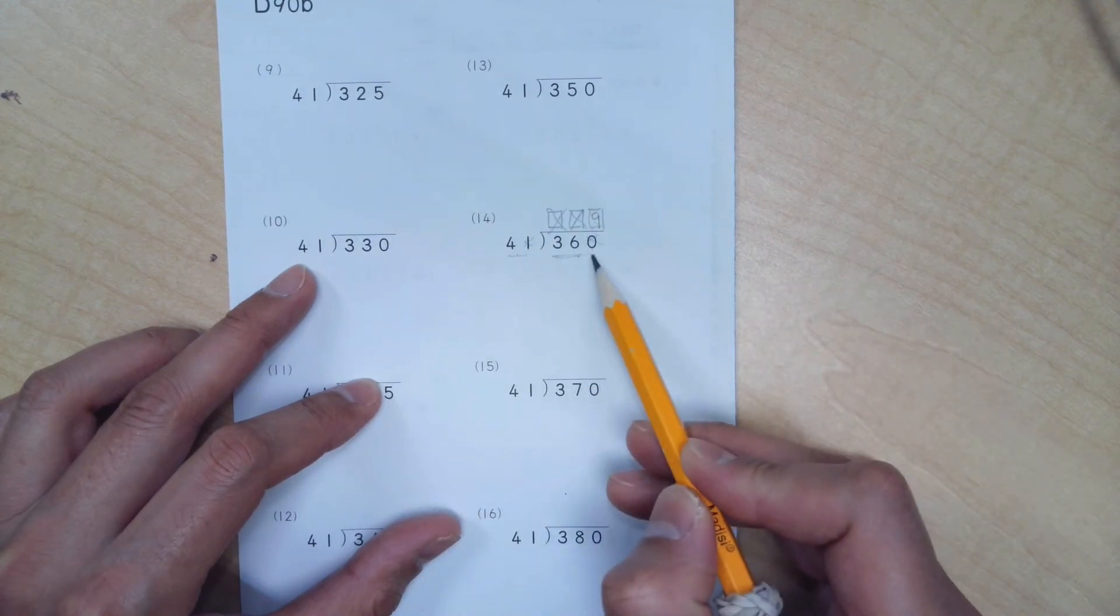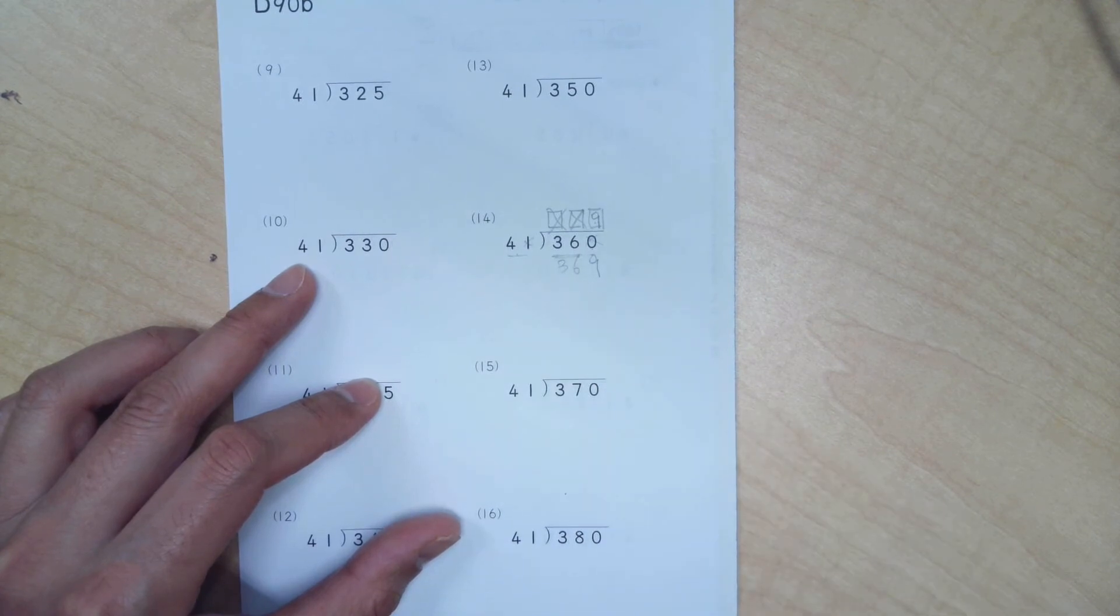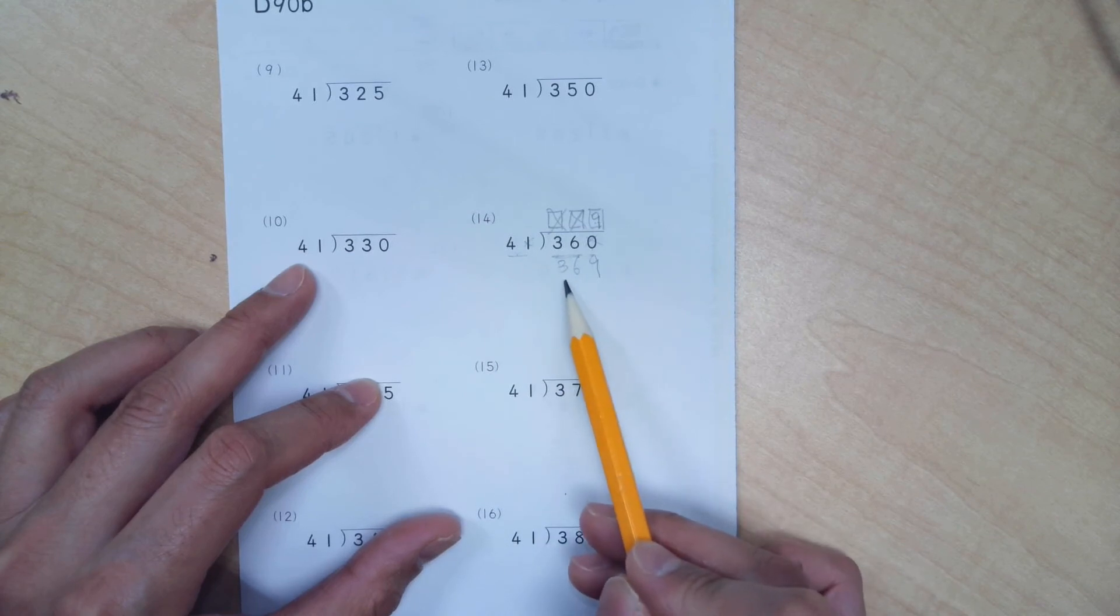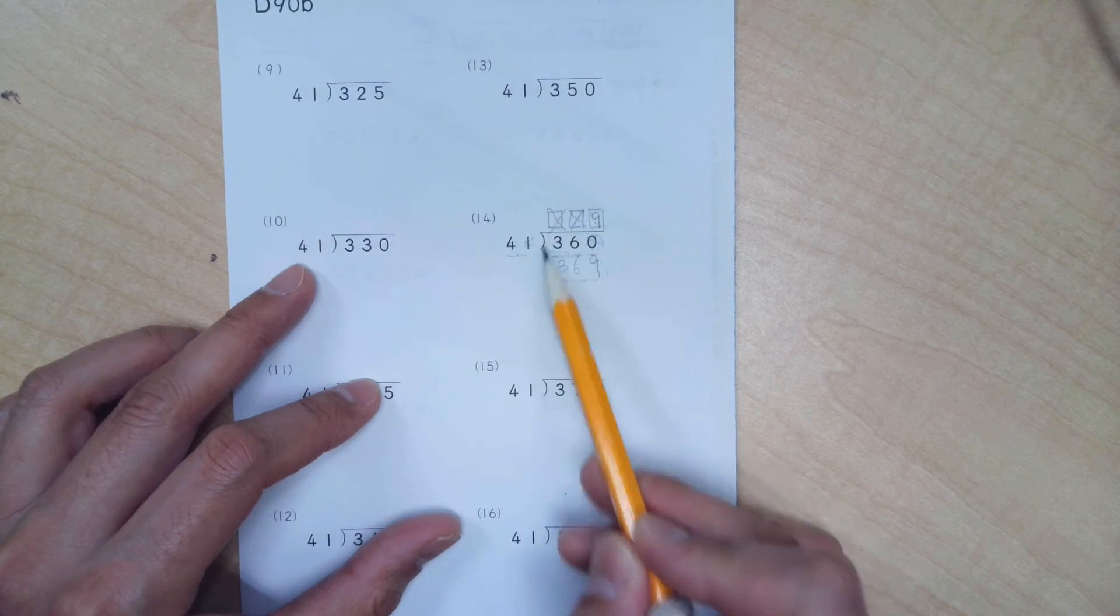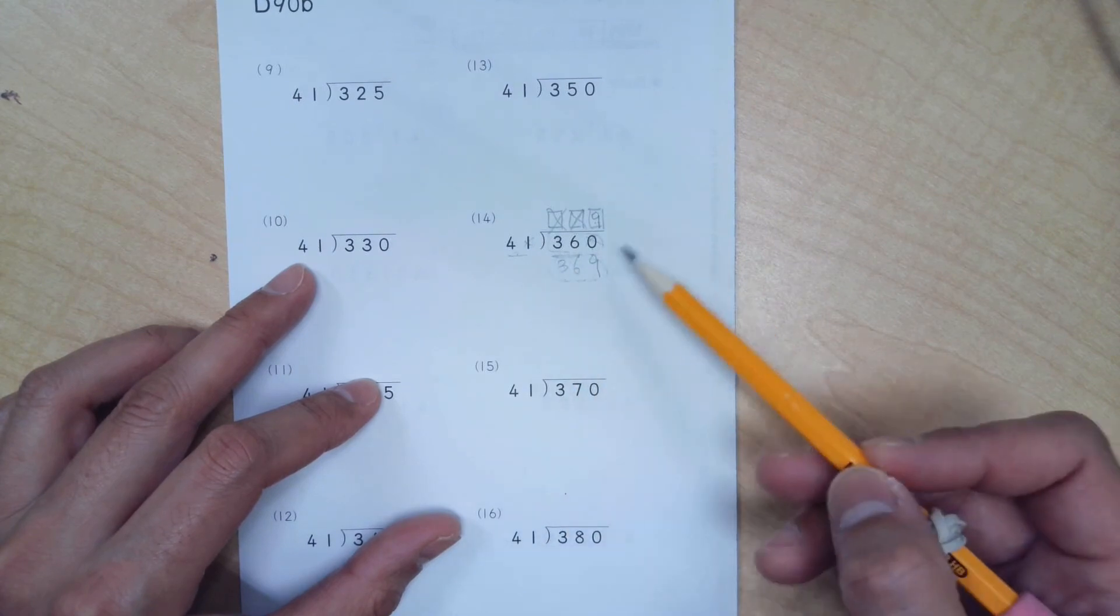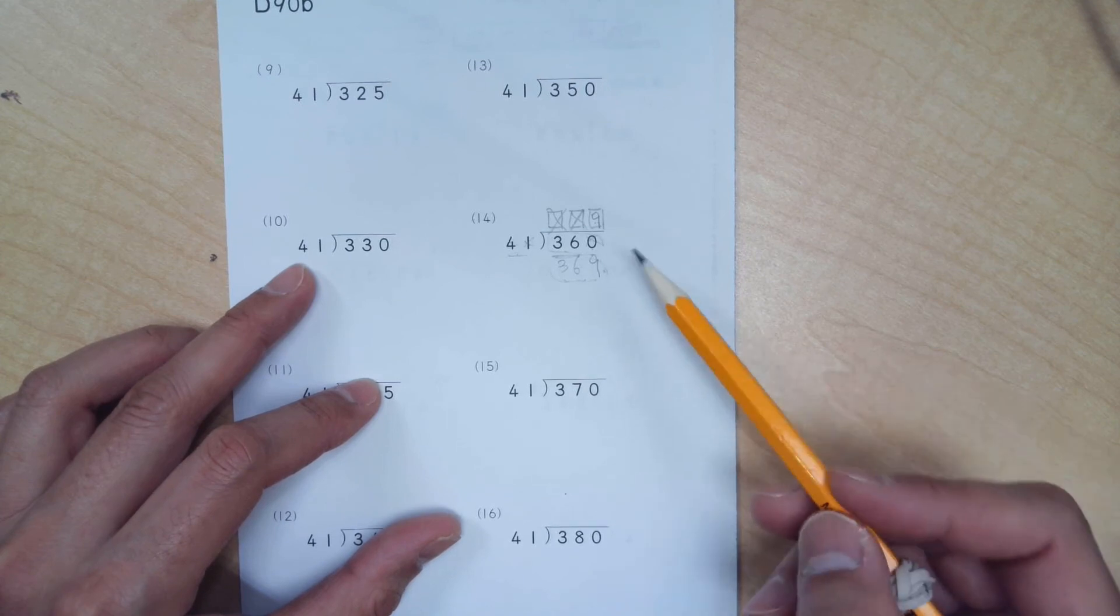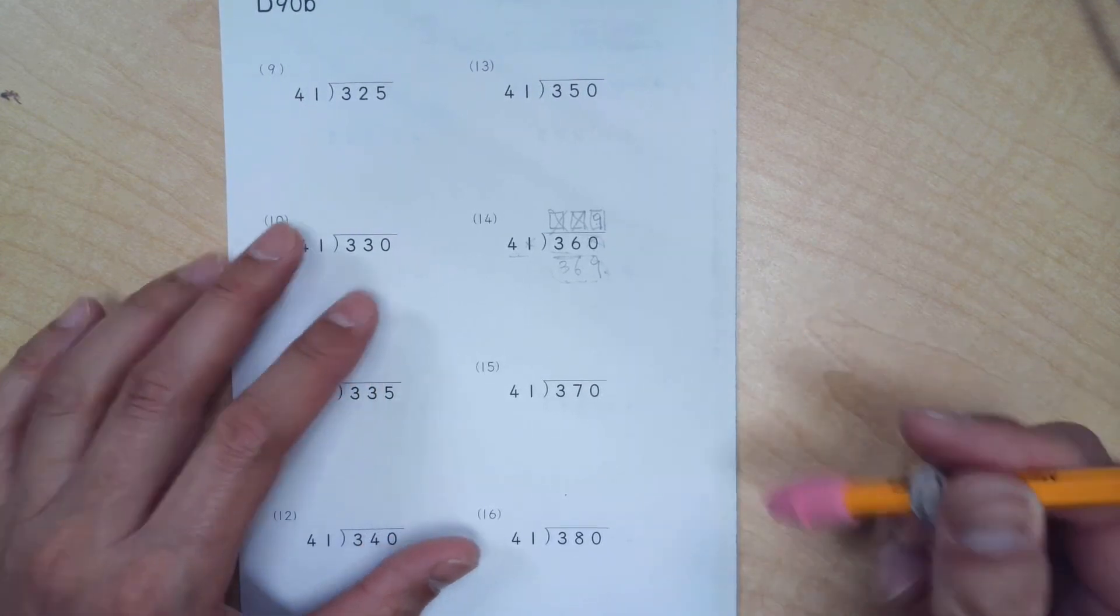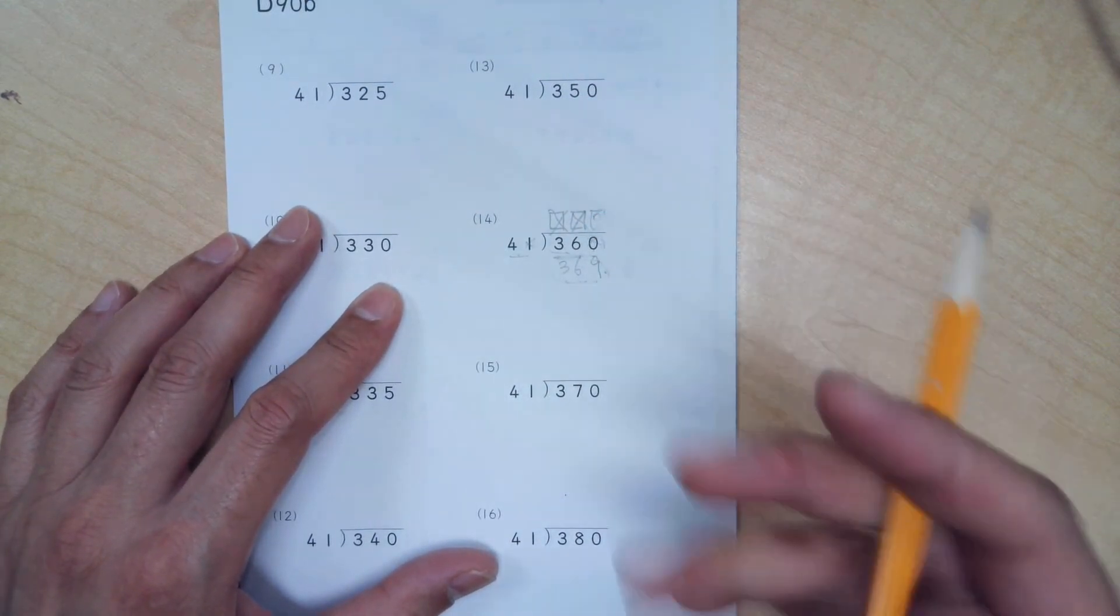1 times 9 is 9. 4 times 9 is 36. But look at that. Our 41 times 9 gave us 369, which is larger than this 360. So we wouldn't be able to do our next step, which is to subtract this number from that number. So our estimation was really close, but it's not quite right. It just gave us too large a number. So in that case, we go back and change our estimated number from 9 to 1 smaller than that, which is 8.